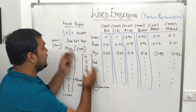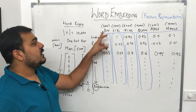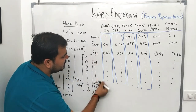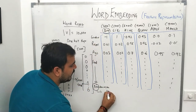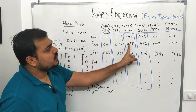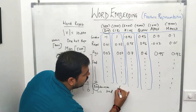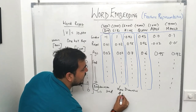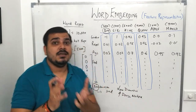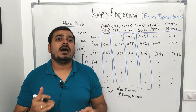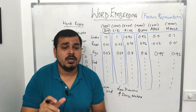In featurized representation, each word is represented by its feature values across all dimensions. With around 300 features, every word gets a 300-dimensional vector — much lower than 10,000 dimensions in one-hot. So one-hot gives us high dimensionality and a sparse matrix, whereas word embedding gives us low dimensionality and a dense matrix. I also made a video on cosine similarity in the machine learning playlist, which helps find the similarity between two vectors.